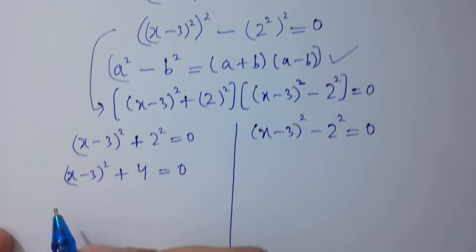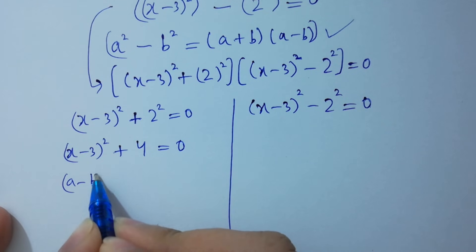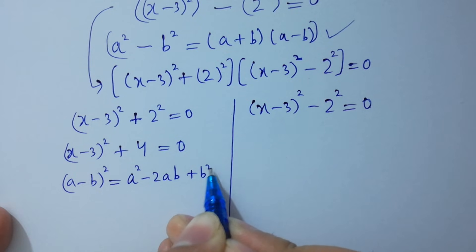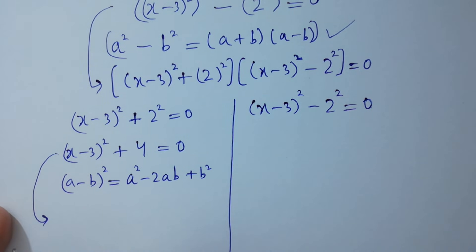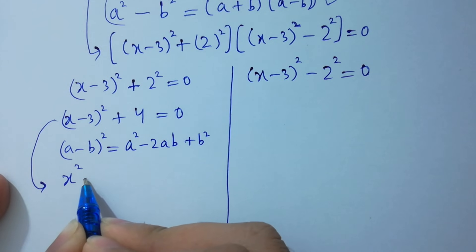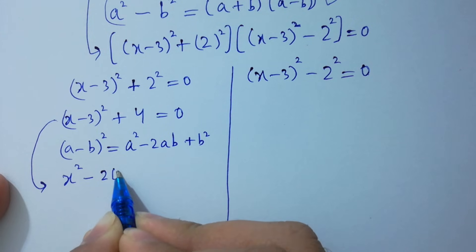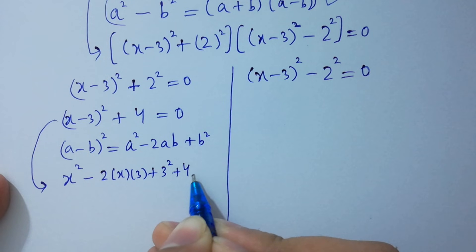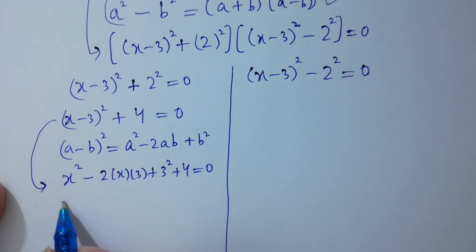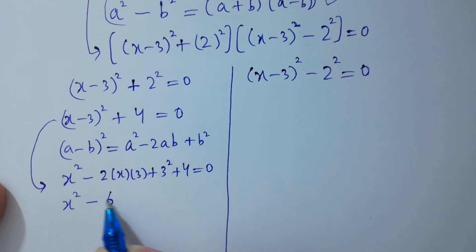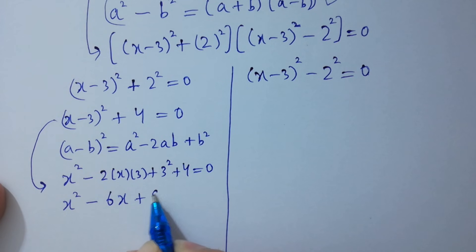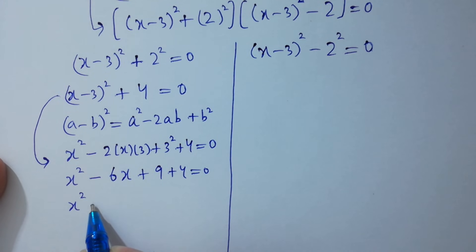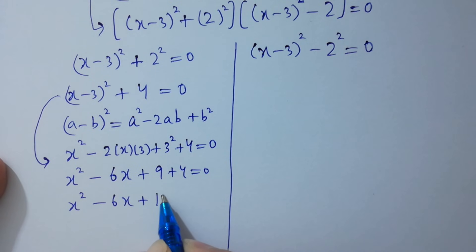Using the formula (a minus b)² equals a² minus 2ab plus b², we expand: x² minus 2 times x times 3 plus 3² plus 4 equals 0, giving x² minus 6x plus 9 plus 4 equals 0. We have the quadratic equation x² minus 6x plus 13 equals 0.